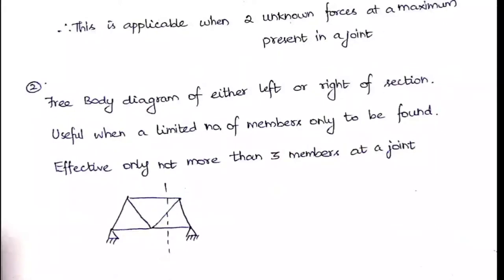It is effective when there are not more than three members at the joint. If there are more than three, you can't use this method also. These are the introduction and limitations for the method of joints and method of sections.